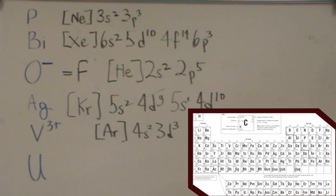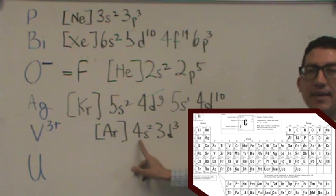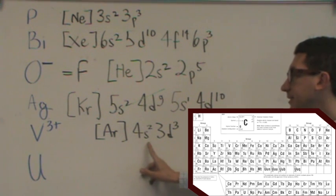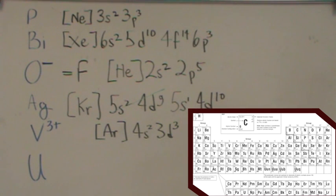the second exception says when you're in the transition metals and you have a cation and you have to remove electrons, you must remove the S's before you remove the D's. Again, you must remove the S's before the D's for a transition metal.